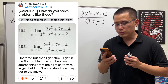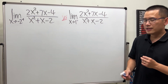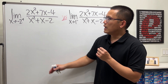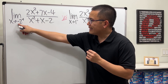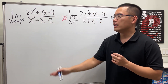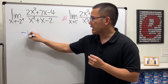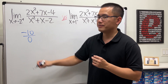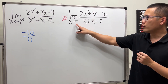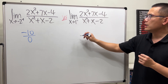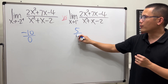Calculus 1 — how do you solve problems like this? If we plug in negative 2 into all the x's, we end up with negative 10 on the top and 0 on the bottom. And if we plug in 1 into all the x's, we get 5 over 0.